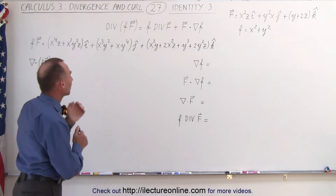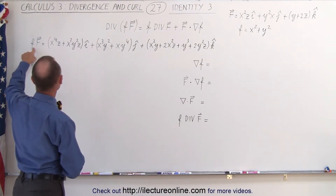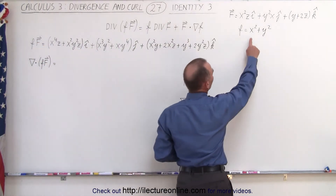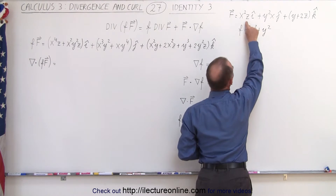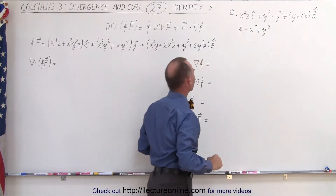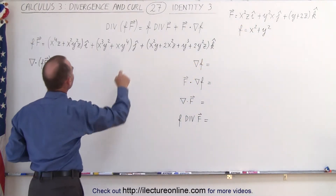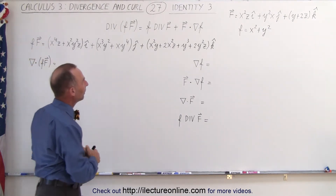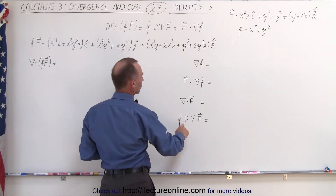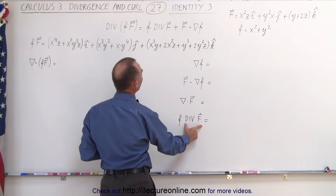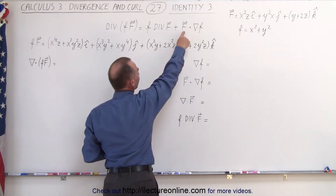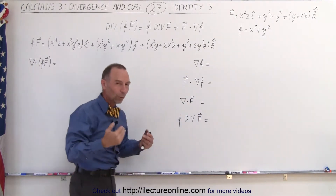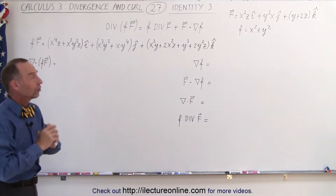What we're going to do is first multiply the scalar function times the vector field — multiplying x-squared y-squared times each of the three components of the vector field — and then take the divergence of that product. That should equal the sum of the scalar function times the divergence of the vector field, plus the vector field times the gradient of the scalar function. We'll work each of those out and show that they are the same.